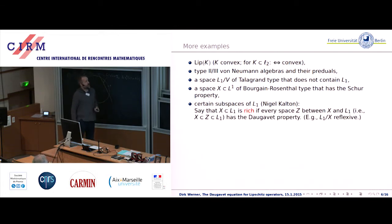Let us say that a subspace of L1 or CK or some other space with the Daugavet property is rich if not only does the subspace itself have the Daugavet property, but also every space in between the space and the superspace has the Daugavet property. Here's an example. If you mod out a subspace of L1 such that the quotient is reflexive, then this will be a rich subspace.